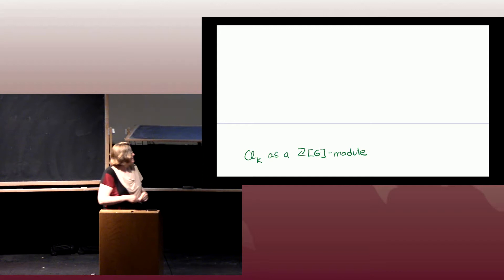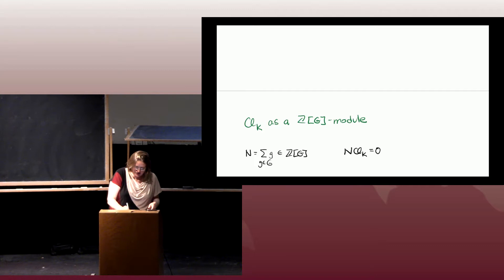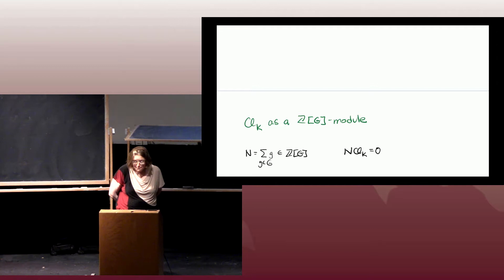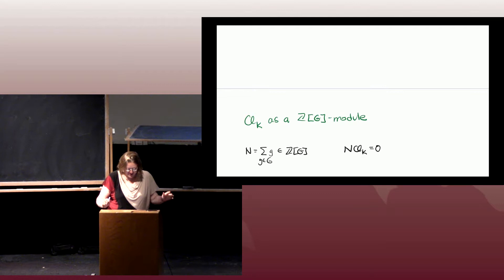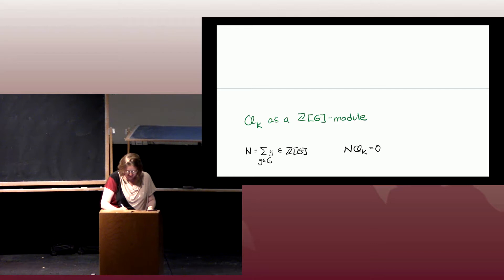Let's think about the class group as a ZG module. There is a particular element I'll call N — thinking of it like norm — in the group ring, which is the sum over all of the group elements. This N element on the class group acts as zero, sending it all to zero. This is because it takes an ideal and multiplies it by all of its conjugates. We'll work at primes away from those dividing the order of G.